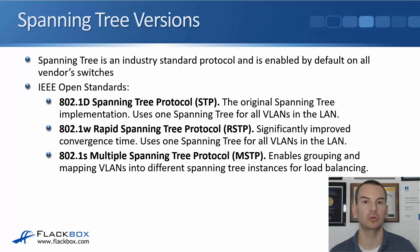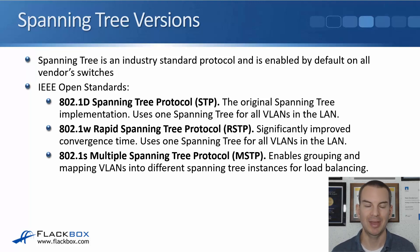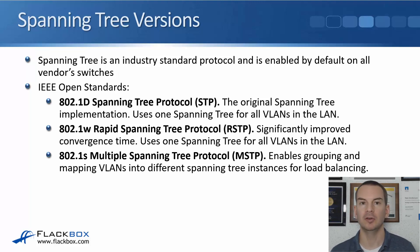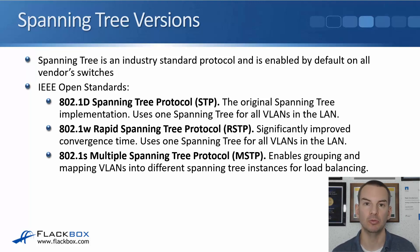To summarize those: 802.1d, the original implementation, has very slow convergence time and doesn't support any load balancing. 802.1w came out after that, which improved the convergence time but also did not support load balancing. The latest one, 802.1s, builds on Rapid Spanning Tree by keeping the improved convergence time and it also enables load balancing.